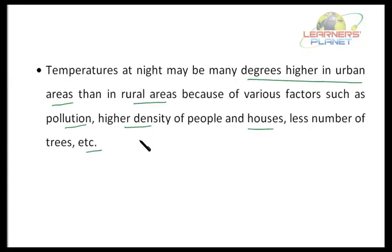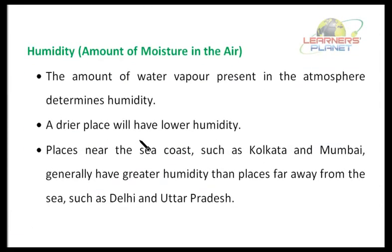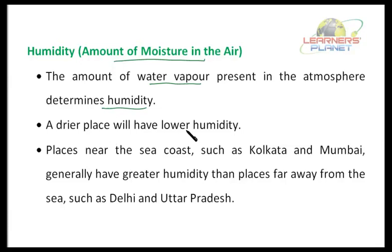The second factor is humidity. Humidity means the amount of moisture, or water vapor, in the air. The amount of water vapor present in the atmosphere determines humidity. A drier place will have lower humidity, while places near the sea coast such as Kolkata and Mumbai generally have greater humidity than places far away from the sea such as Delhi and Uttar Pradesh. Remember that the humidity of a region is also usually higher in the rainy season than during summer and winter.